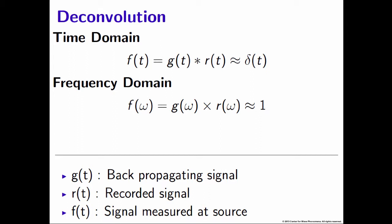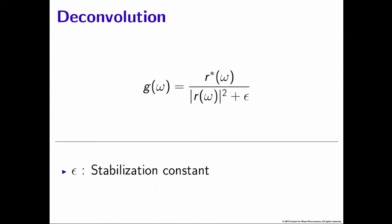We stated that we had a signal recorded at our receivers, R(t), convolved with G(t) — our deconvolved signal that we're solving for — is approximately equal to a direct delta function. When we bring this to the frequency domain, this becomes a multiplication and your direct delta function becomes 1. Solving for G(ω), one gets the following result, where we've added a stabilization constant epsilon in the denominator for scenarios where the denominator could equal zero, and in the numerator you have the complex conjugate.